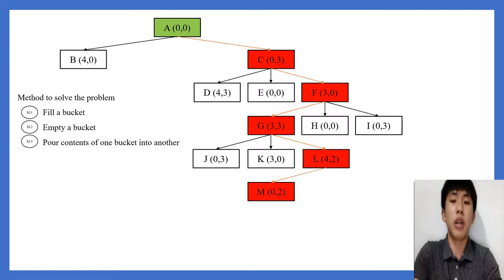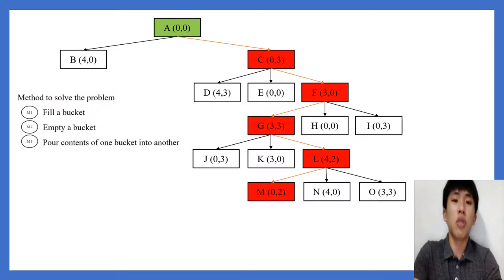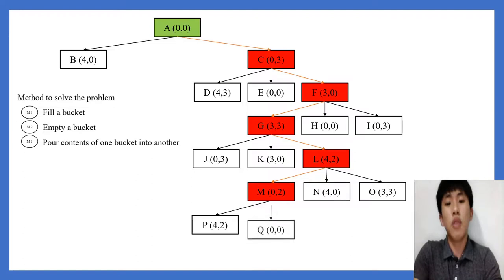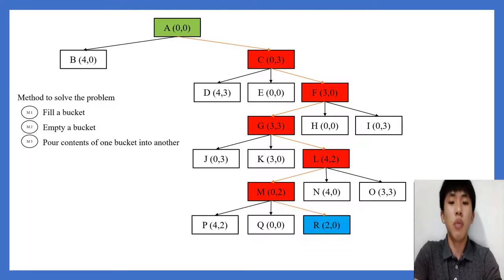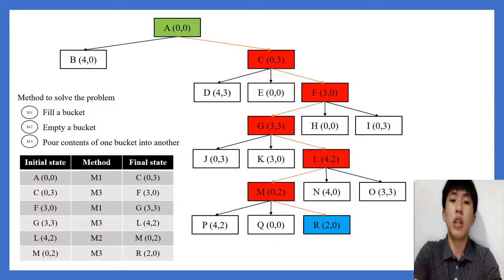Using Method 2 to empty x gives (0,2). Using Method 2 again to empty y gives (4,0). Using Method 3 again gives (3,3). Focusing on (0,2): using Method 1 to fill x gives (4,2); using Method 2 to empty y gives (0,0). Using Method 3 gives the goal state (2,0). This is the mapping from initial state (0,0) to result (2,0), and the table shows the 6 steps taken.